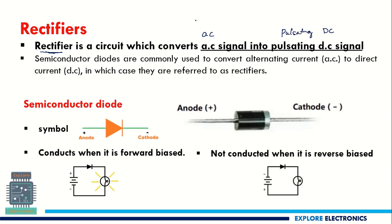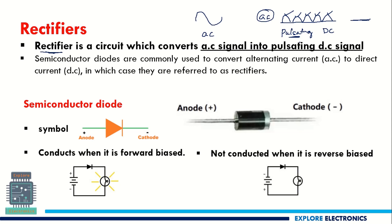We call it pulsating DC because if the AC signal is like this, the rectifier converts it into pulses — not a continuous, constant DC signal. These pulses are present in the output of the rectifier, and the output also consists of some AC component, which is why it is not a purely AC to DC converter.